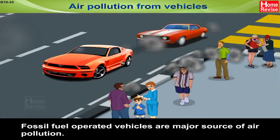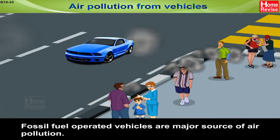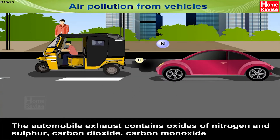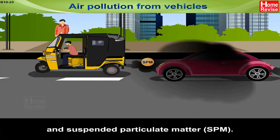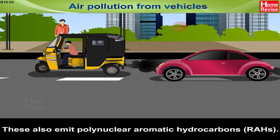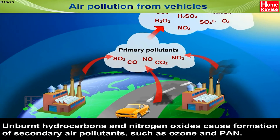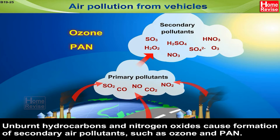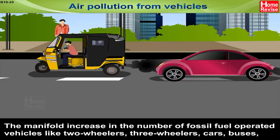Air pollution from vehicles: fossil fuel operated vehicles are a major source of air pollution. Automobile exhaust contains oxides of nitrogen and sulfur, carbon dioxide, carbon monoxide, and suspended particulate matter (SPM). Vehicles also emit polynuclear aromatic hydrocarbons (PAHs). Unburned hydrocarbons and nitrogen oxides cause the formation of secondary air pollutants such as ozone and PAN.